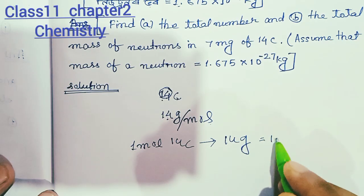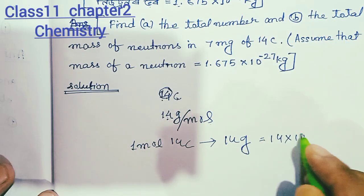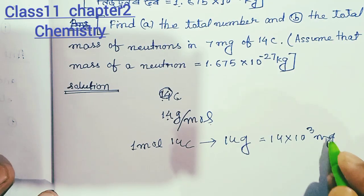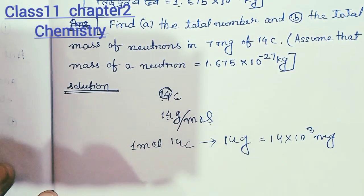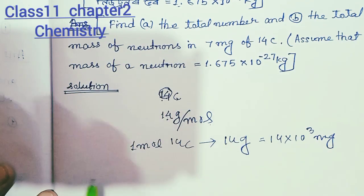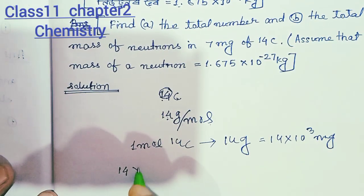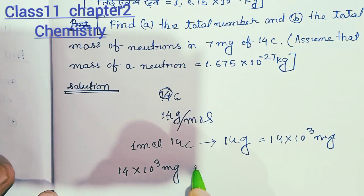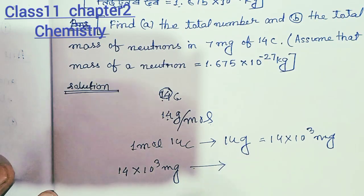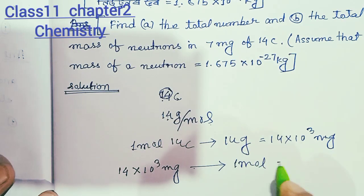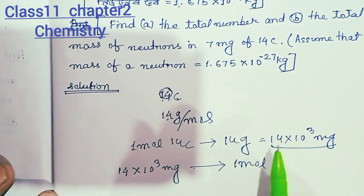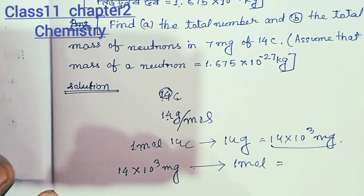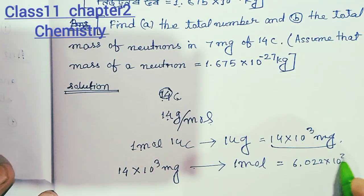Now, if we have 7 milligrams — how do we work from grams to atoms? We use Avogadro's number: 6.022 × 10²³ atoms per mole.